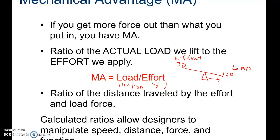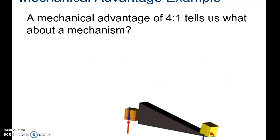We have defined mechanical advantage as 100 divided by 30, which is greater than one. When the mechanical advantage is calculated as greater than one, then there is an advantage to the machine.